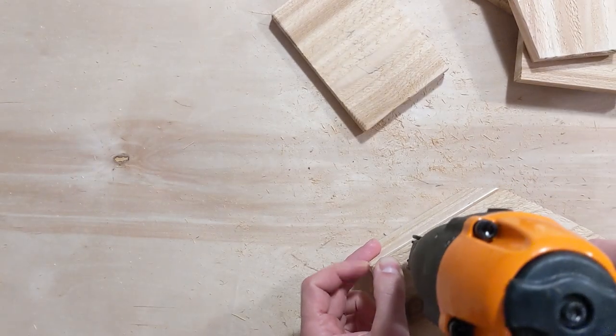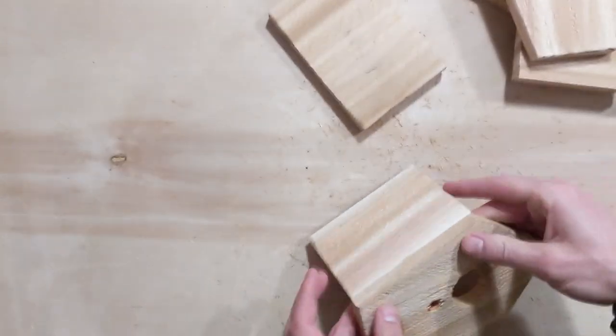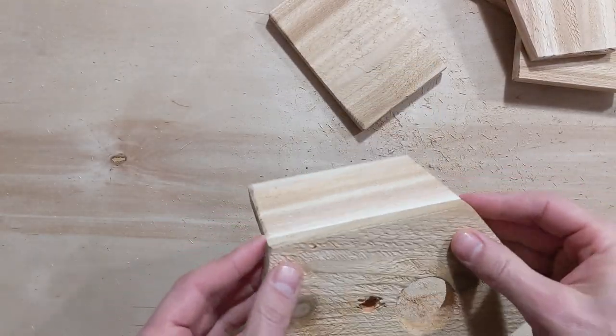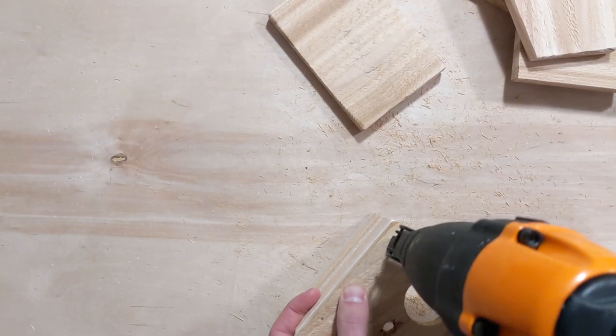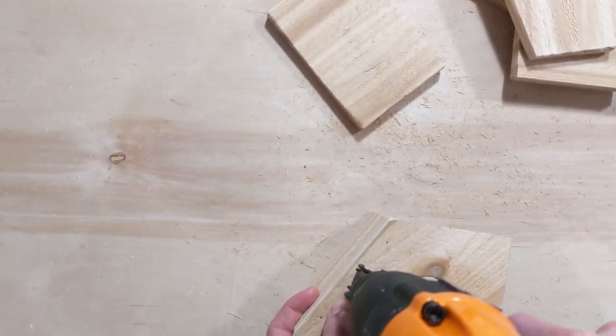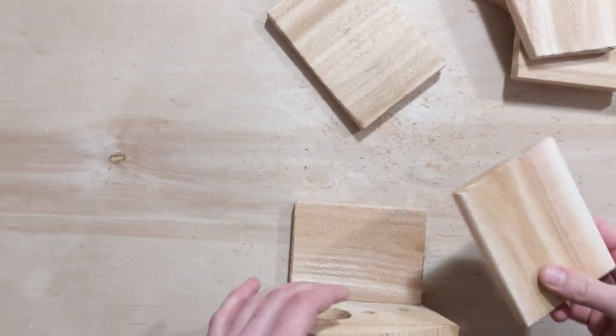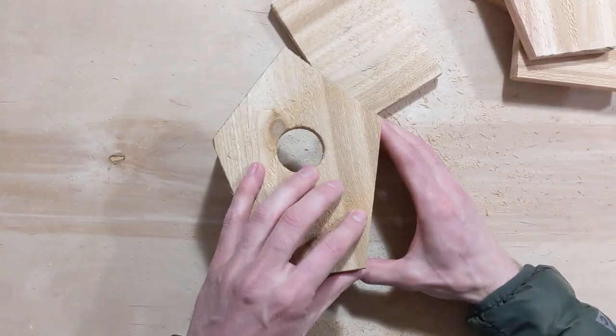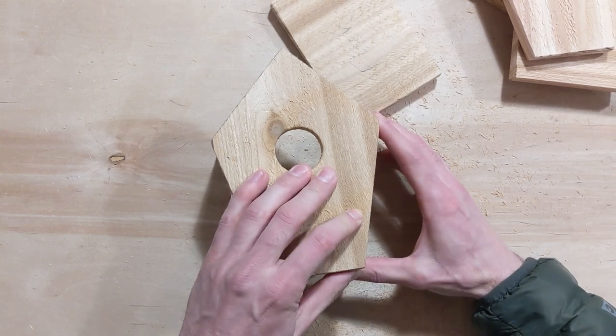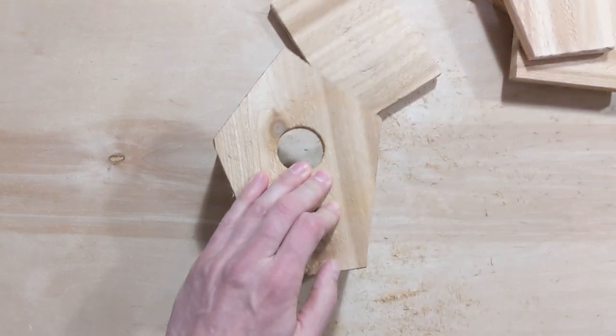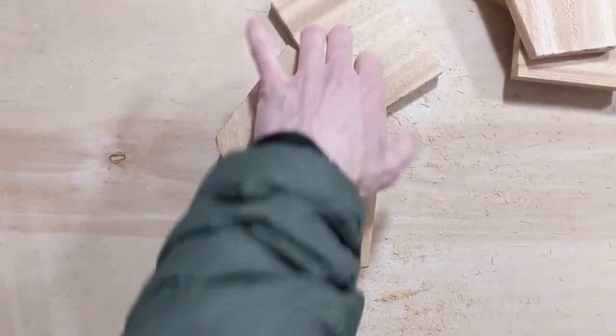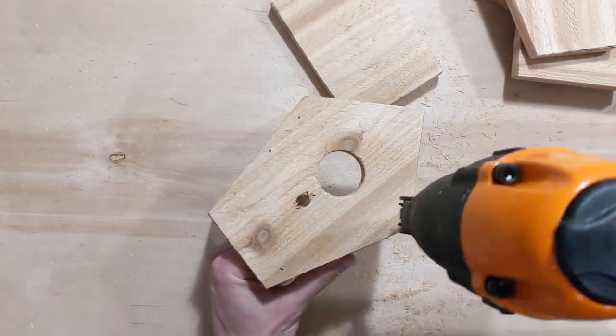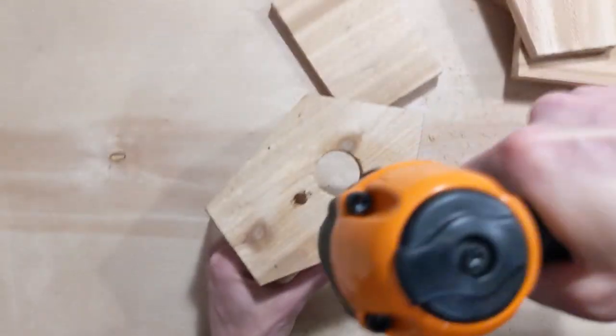Line up one of the side pieces with the front, matching the two sides that are the same length. Once they are close to perfect, shoot three or four evenly spaced brad nails through the front and into the side. Orient the front face up and place the other side where it goes so the front is sitting on both sides. Once you have the other side lined up close to perfect, shoot three or four nails into that side.